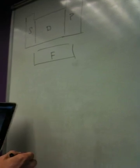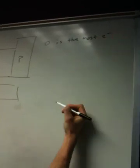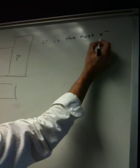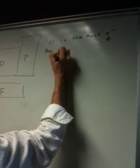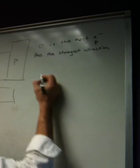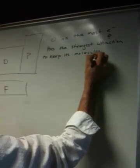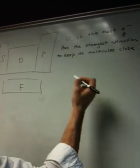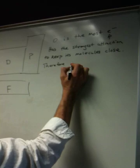Basically, in the problem, they're talking about oxygen and nitrogen being the central atoms in the problem that you just saw. Oxygen is the most electronegative. And the most electronegative central atom has the strongest affinity, which means attraction to keep its molecules close, or electrons. So, therefore, it's least likely to give up its hydrogen ion.